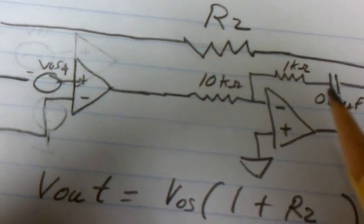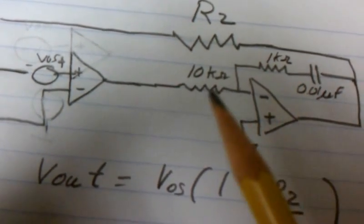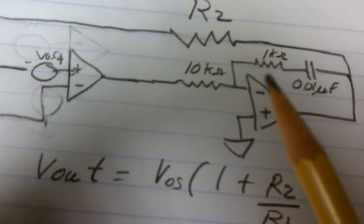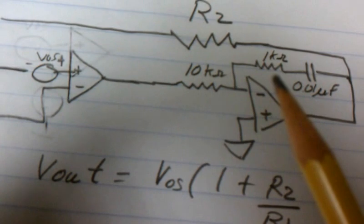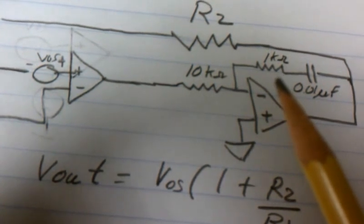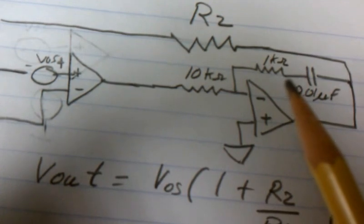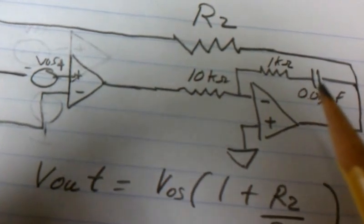But at AC, this starts to act like a short. And since R1 is greater than R2, we would get a decrease in voltage. And so it filters out high frequency signals which would include noise.